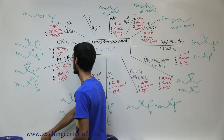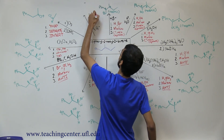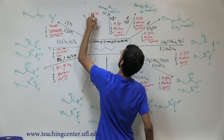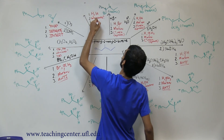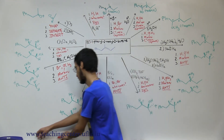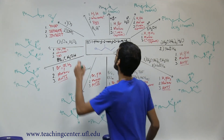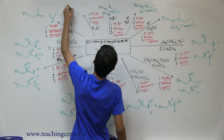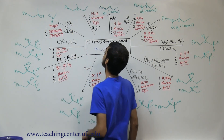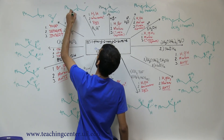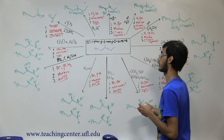The last reaction is hydrogenation. The 1-2-3s: we add H and H; regiochemistry is 'who cares' since we're adding the same thing; and it's syn addition. The product takes away the double bond and forms a chiral center, giving a racemic mixture. Those are all 12 reactions.